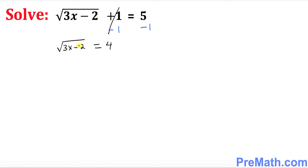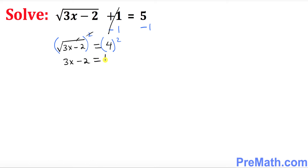Now we want to get rid of this square root, so we're going to square both sides. The square and the square root undo each other, so we end up with 3x minus 2 equal to 16.